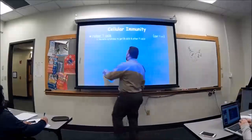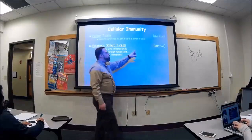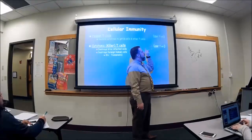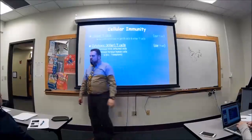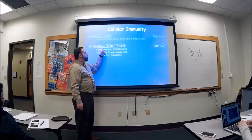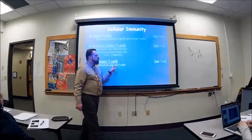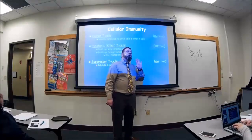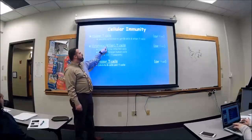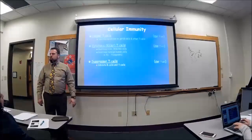We have helper T cells and we have cytotoxic, also called killer T cells. The helper T cell has a receptor called CD4. On the killer T cell they have something called CD8. So we also refer to helper T cells as T4 cells. We also refer to killer T cells as T8 cells. That's where that comes in.